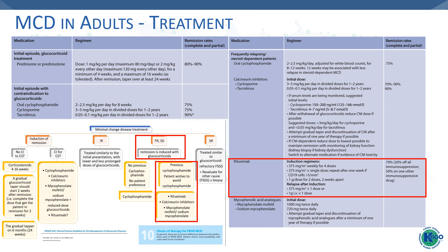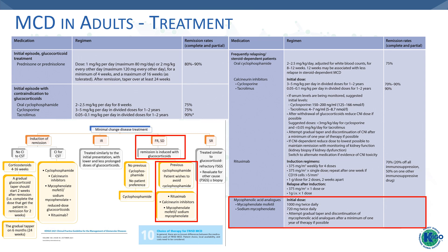Rituximab can also be used, with available regimens for induction of remission, and it can be used at lower doses for relapse. Finally, mycophenolic acid analogues can be used in cases of frequent relapse and steroid dependence, for a minimum of 1 year of therapy if possible to prevent relapse.